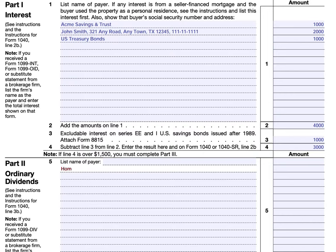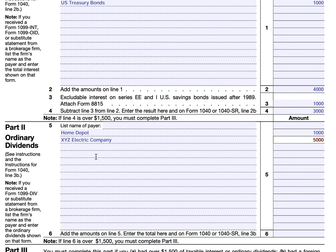For example, Home Depot stock paid $1,000 of dividends and you did not own it long enough for them to be qualified dividends, so they're still ordinary dividends. A utility stock like XYZ Electric Company paid $5,000.